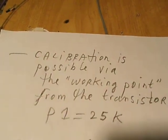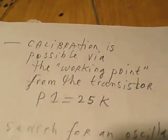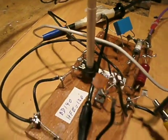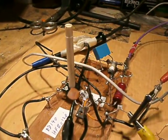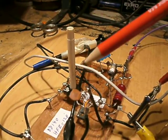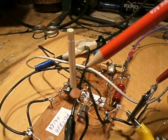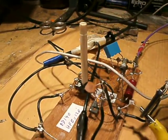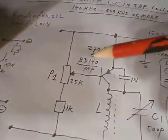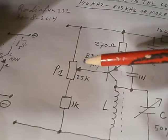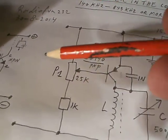At first, the calibration is possible via the working point from the transistor. I've seen that when I tune this potentiometer, the frequency also changes. So my advice is to replace the potentiometer by two fixed value resistors. Here, two fixed value resistors.